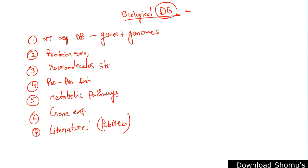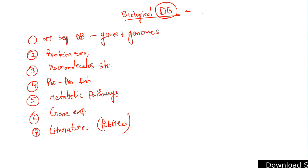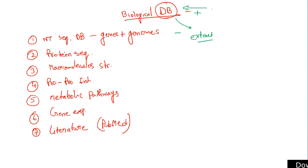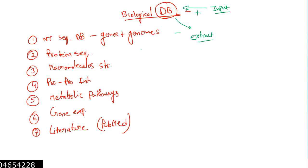An example of a literature database is PubMed, which we have already discussed. These databases carry information, and there is a way to feed data in and also a way to extract the data. The amount of data we are dealing with is increasing day by day as the number of experiments increases.